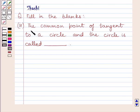Fourth part is, the common point of tangent to a circle and the circle is called blank.